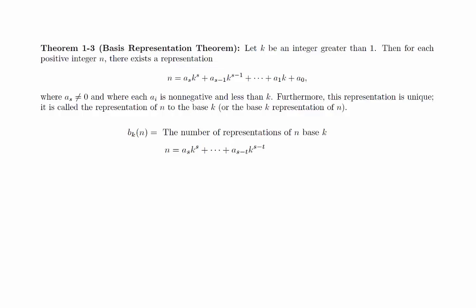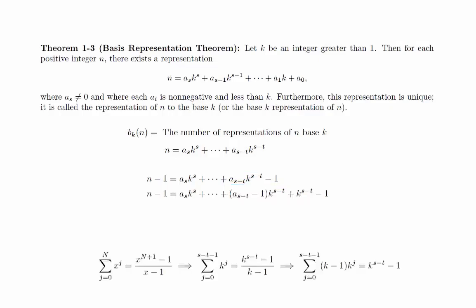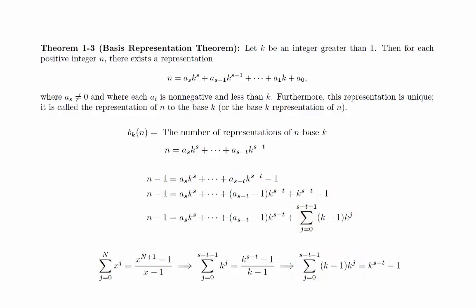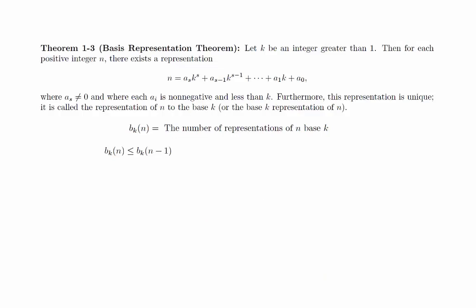To start, let's consider a representation of n as we've just described. We will subtract 1 from both sides of the equation. Notice that since the last coefficient is non-zero, we can pull out one of them and rewrite the equation. We can now use the formula for the sum of a finite geometric series with x equal to k on these terms. This calculation shows that every representation of n leads to a representation of n minus 1, so that there are at least as many representations of n minus 1 as there are representations of n. In other words, b sub k of n is less than or equal to b sub k of n minus 1.